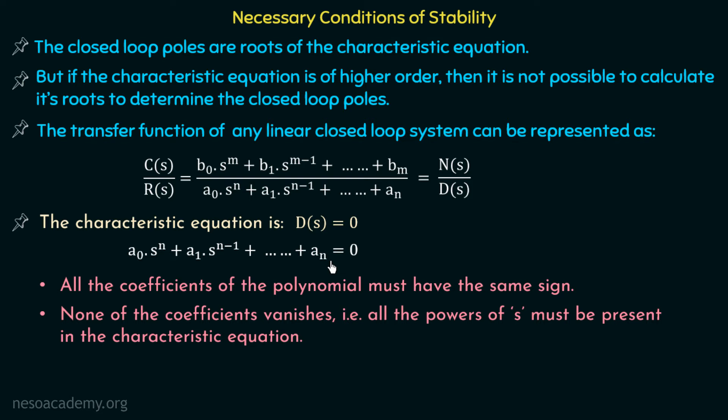For example, if n equals 4, it is a fourth-order equation, so we will have s⁴, s³, s², s¹, and s⁰ — all five powers must be present. None of the coefficients should vanish. If any coefficient is missing in the characteristic equation, we can say that the system is unstable.